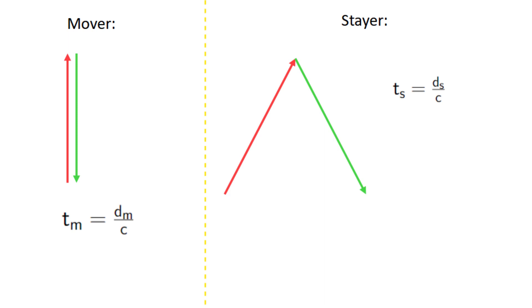And now, to find tm and ts, we just need to find dm and ds, or the length of the path in each reference frame.